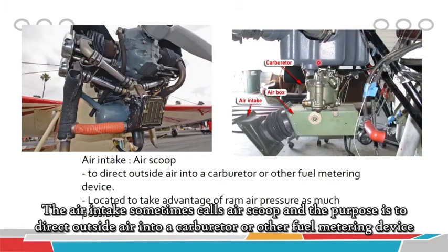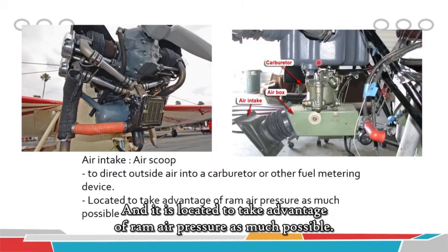The air intake, sometimes called the air scoop. The purpose of this is to direct outside air into the carburetor or fuel metering device, and it is located to take advantage of ram air pressure as much as possible.